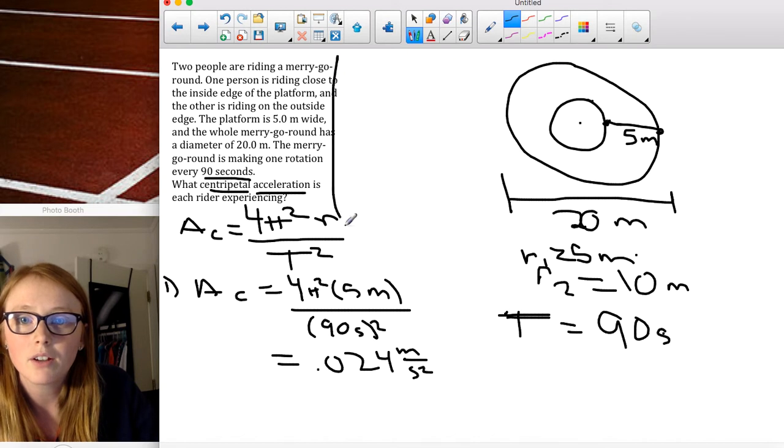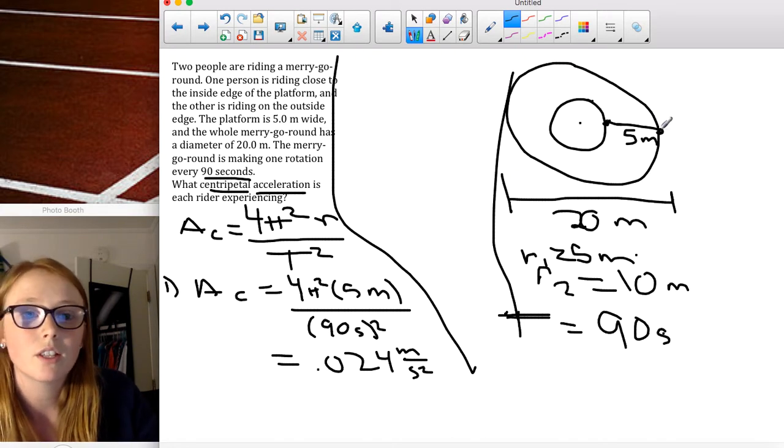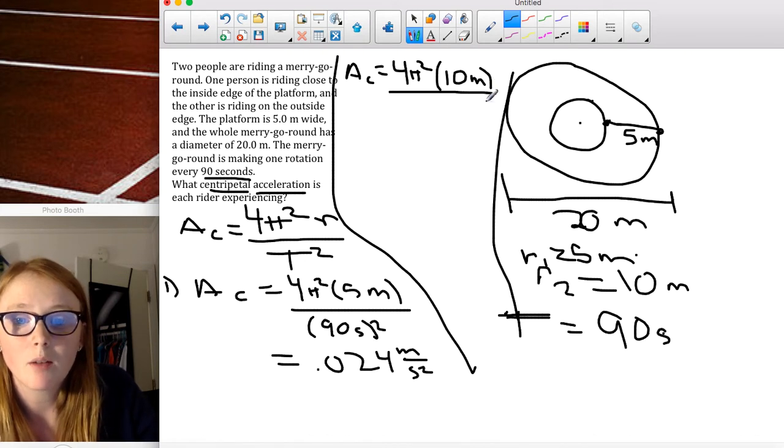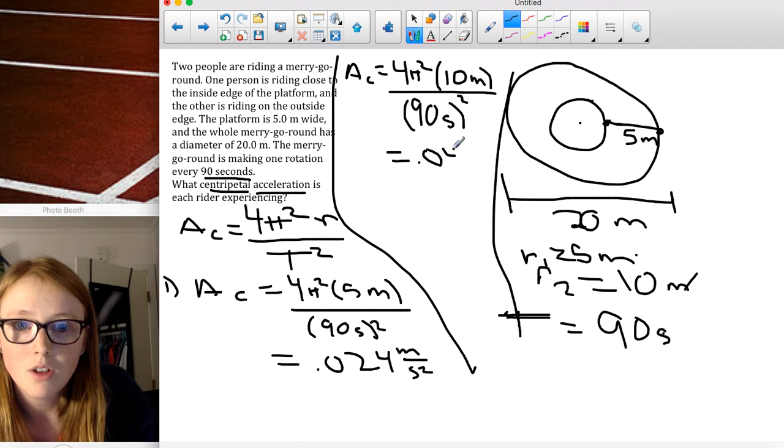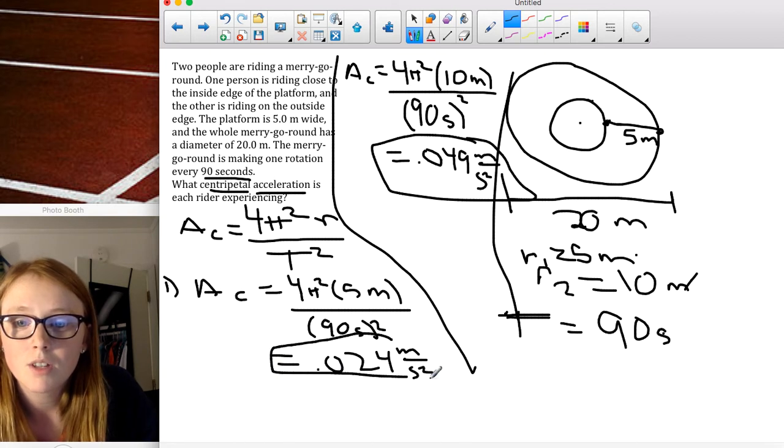On the outside rider, let's make a little box here. We're going to do the same thing. Obviously, the time that it takes to do a rotation is the same. The only thing that changes is the radius. So, we're going to do the same math. AC is equal to 4 pi squared times our radius, which this time is 10 meters. And, divide by our capital T squared, which is going to be the same. That's 90 seconds. We're going to take 90 seconds and square that. And, then when you do all of that math, you end up with 0.049 meters per second squared. And, so, those are going to be your two accelerations for your two little guys on a merry-go-round.